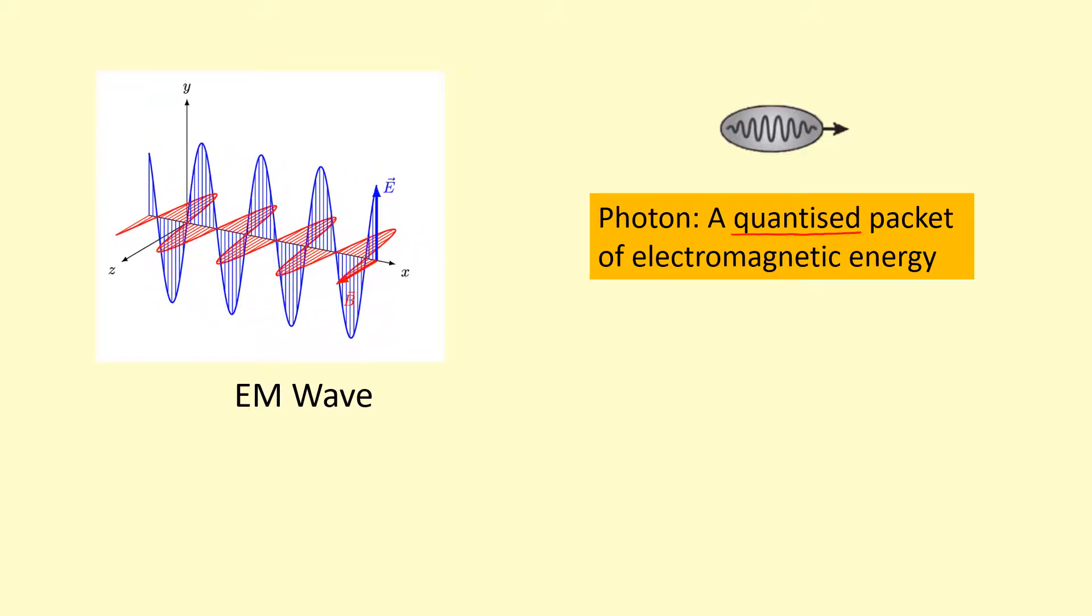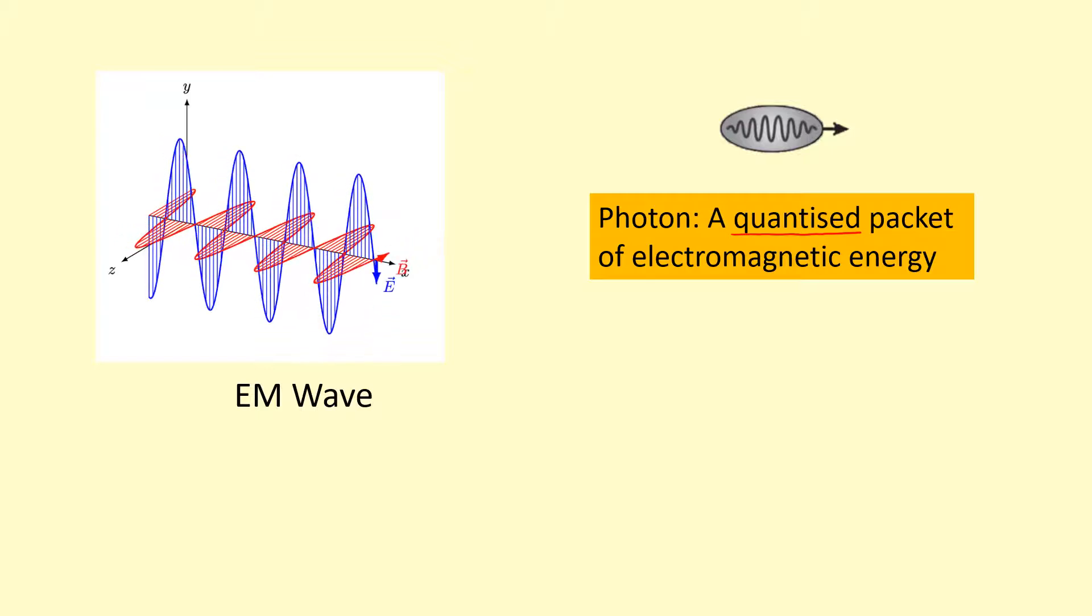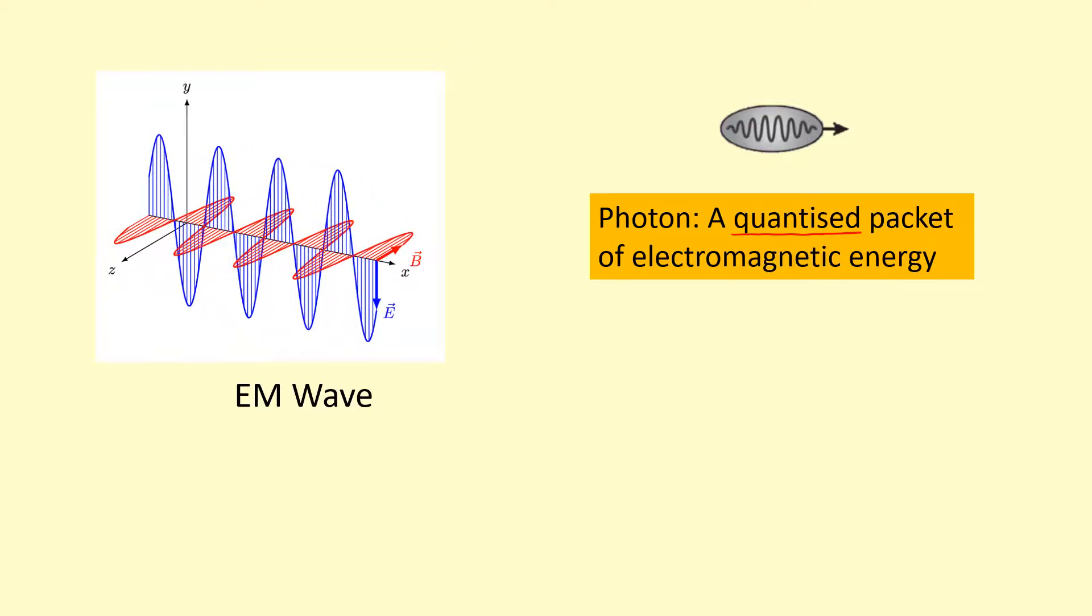A photon is a quantized packet of electromagnetic energy. The word quantized means discrete, or it comes in chunks. It's the opposite of continuous.